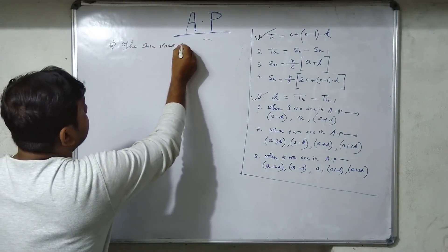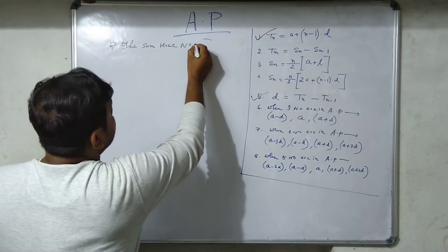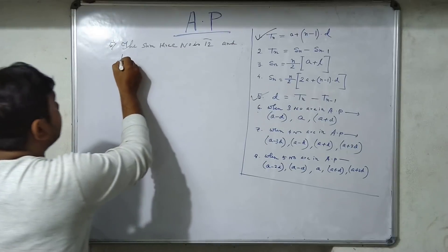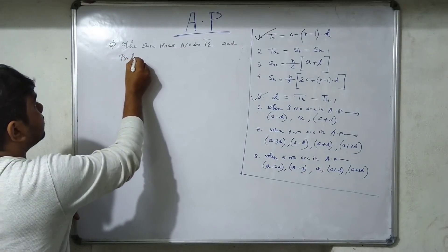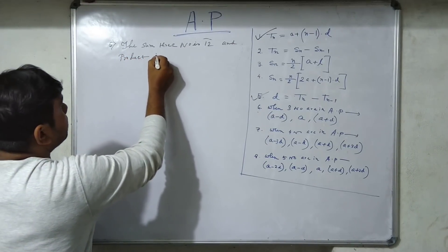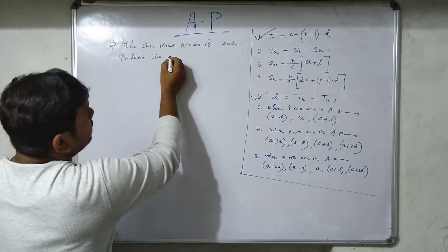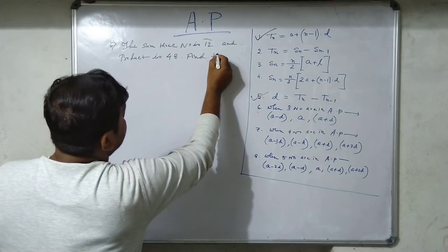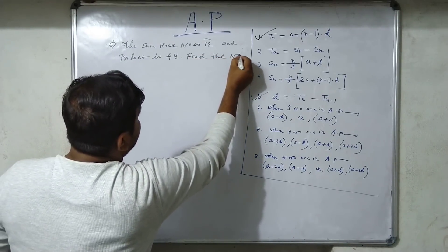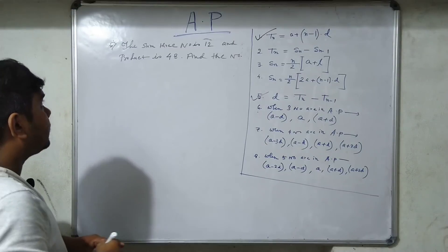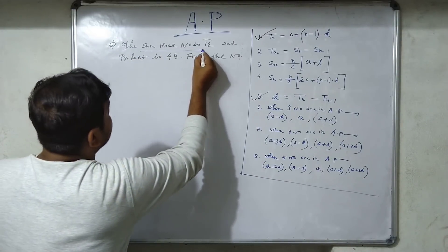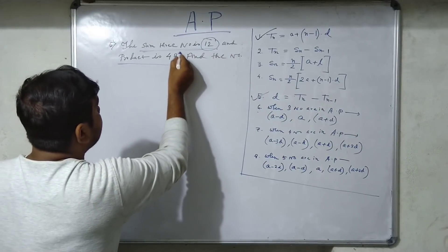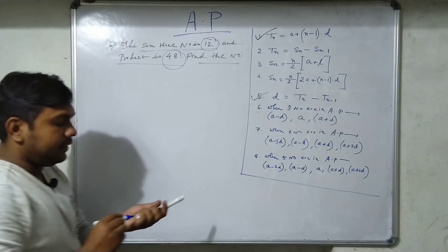Example: three numbers in AP have a sum of 12 and a product of 48. Find the three numbers. The sum of the three numbers is 12 and the product of the three numbers is 48.